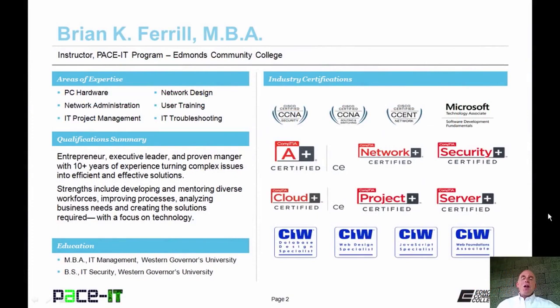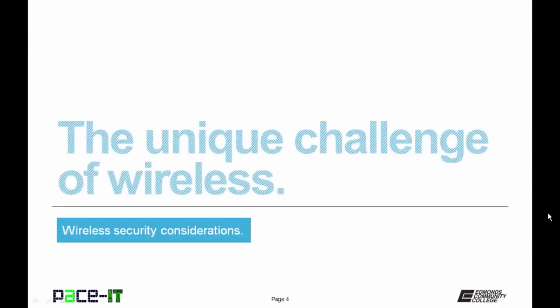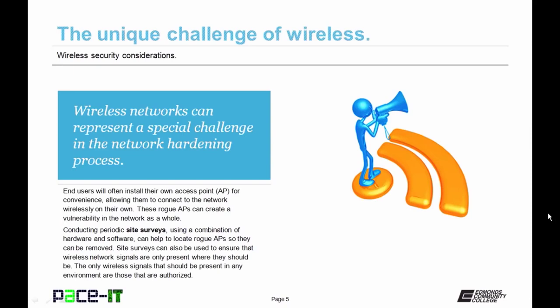Good day, I'm Brian Farrell, and welcome to Pace IT's session on Wireless Security Considerations. Today we're going to discuss some of the unique challenges of wireless networks and then move on to security for wireless. Wireless networks can represent a special challenge in the network hardening process. One of the main tenets of network security is hiding your traffic, but with wireless it's impossible to hide your traffic because it flows over the airwaves—with the proper equipment, anybody can see that traffic. End-users will often install their own access points for convenience, creating rogue access points that can create a vulnerability in the network.